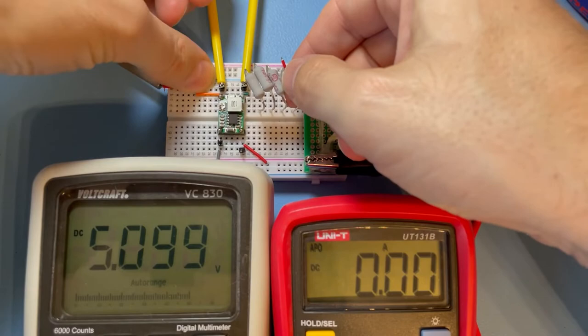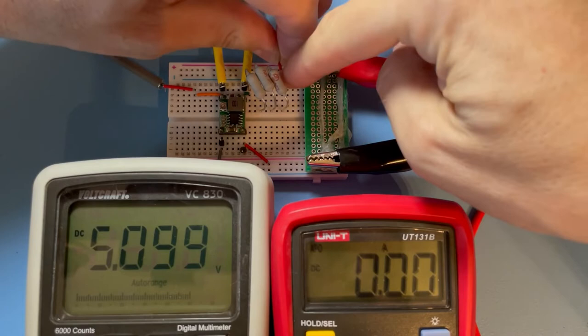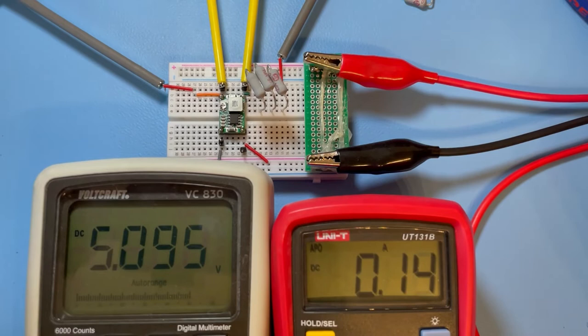Now let's go to three 10 ohm resistors. Now we have 160 milliampere, still stable.